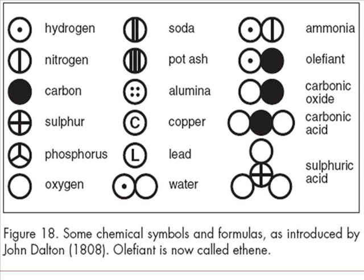Later, John Dalton came up with some chemical symbols and formulas very similar to what we have today. If you look at the symbol for hydrogen — the circle with the dot — and then the symbol for ammonia, which is the combination of hydrogen along with the symbol for nitrogen. Ammonia's formula, which you'll learn later, is a combination of nitrogen and hydrogen, though not in this ratio. He was certainly getting closer to the chemical formulas of today.